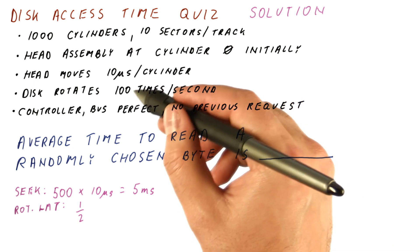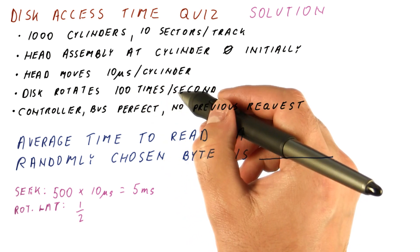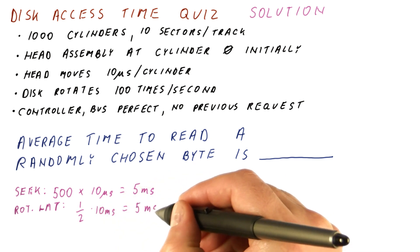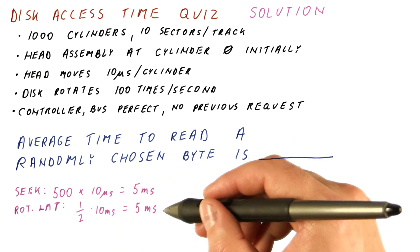Each rotation is a hundredth of a second or 10 milliseconds. So we end up adding another 5 milliseconds to our read time.